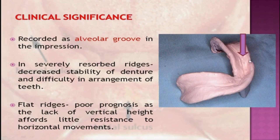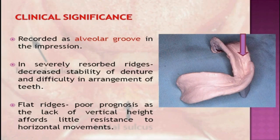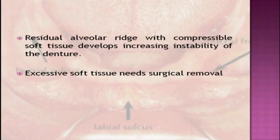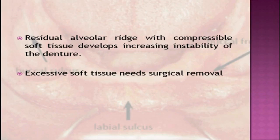In severely resorbed ridges, there will be decreased stability of the denture and difficulty in arrangement of teeth. Flat ridges also have poor prognosis because the lack of vertical height offers little resistance to horizontal movements. Flaccid alveolar ridges with compressible soft tissues develop increasing instability of the denture, and excessive soft tissues may need surgical removal. The supporting structures of the mandibular area have been summarized, and in the next part I will cover the relief areas of the mandibular denture-bearing area.